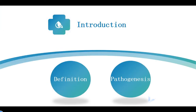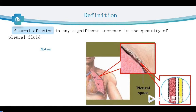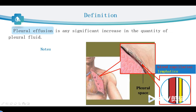Now let's look at the definition of pleural effusion. Pleural effusion is any significant increase in the quantity of pleural fluid. We know that there are two layers of the pleura. One is called visceral pleura, which covers the surface of the lungs. Another one is called parietal pleura, which covers the inside of the thorax. In both layers of the pleura, there are many blood capillaries and lymphatics, which produce the pleural fluid.